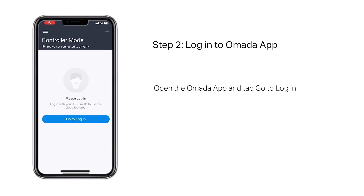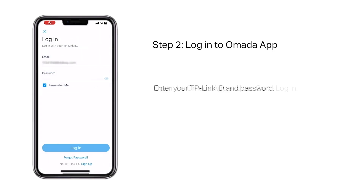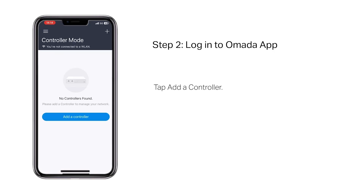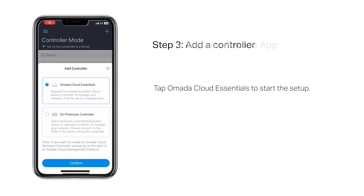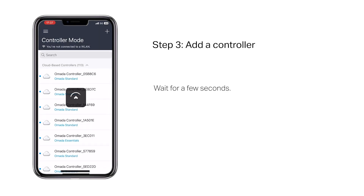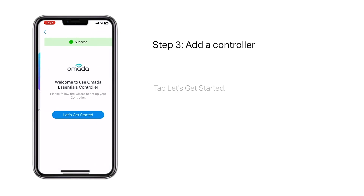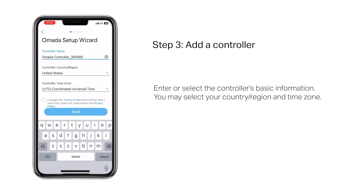Open the app and tap 'Go to Login.' Enter your TP-Link ID and password. Tap 'Add a Controller,' then tap 'Omada Cloud Essentials' to start the setup. Wait for a few seconds, then tap 'Let's Get Started.'